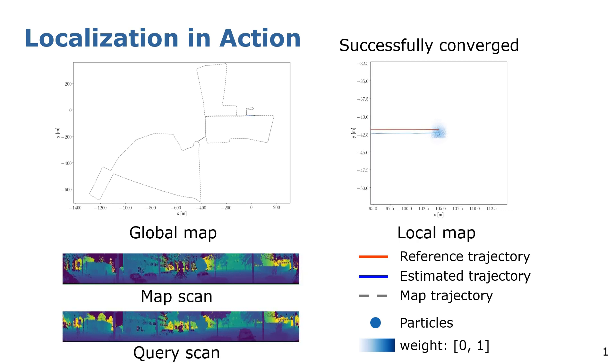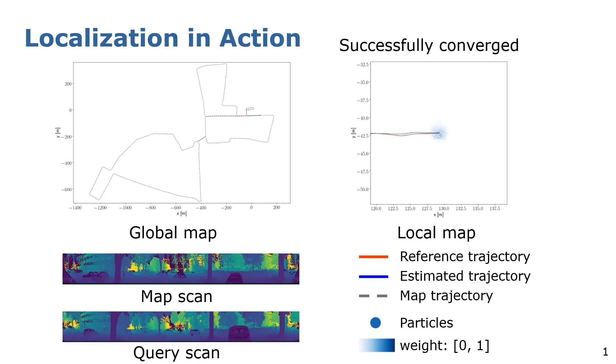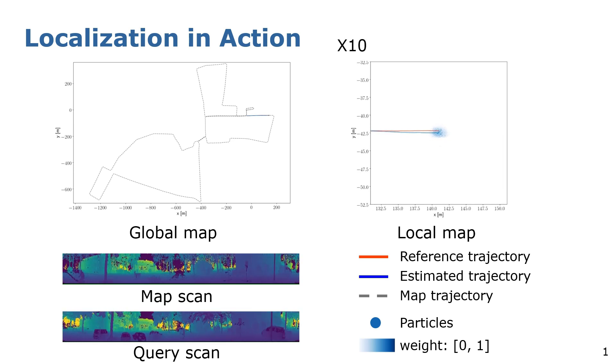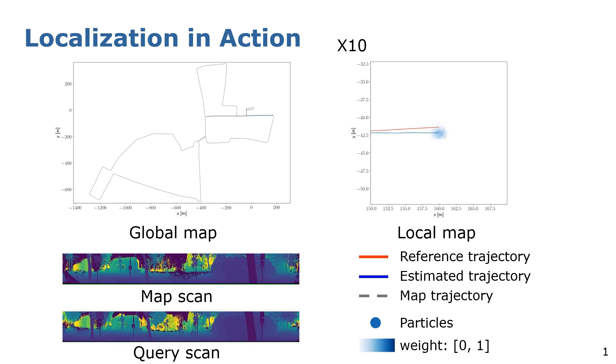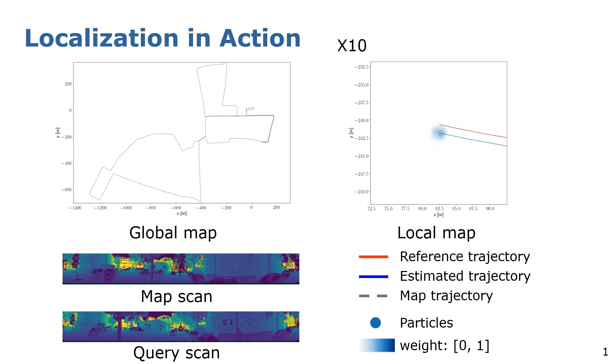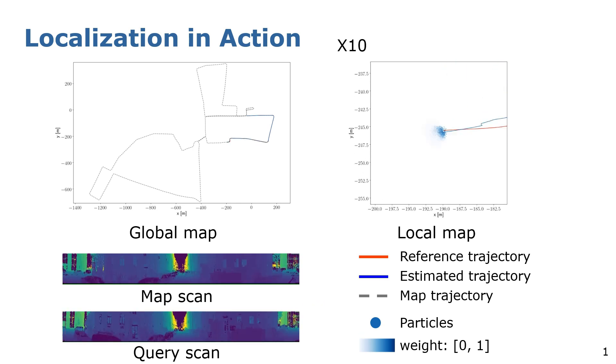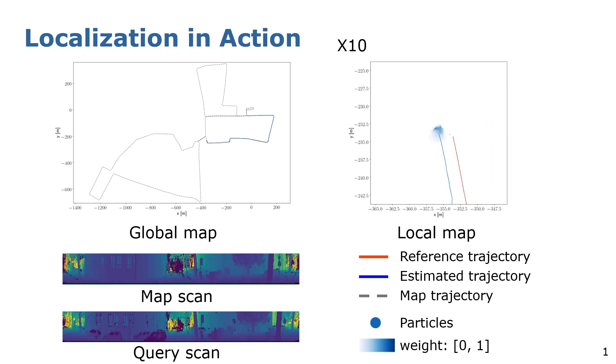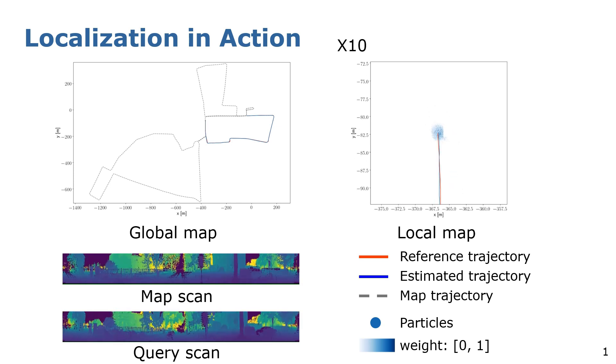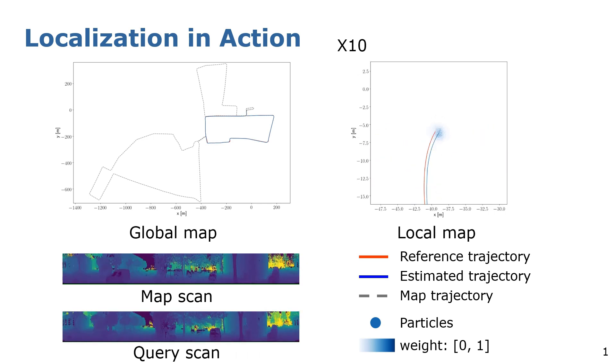In the lower part, we show the current query scan and the map scan of the estimated location. The red line represents the reference trajectory and the blue line represents the estimated trajectory. The blue dots are the particles and the darker the blue, the higher is the weight of that particle. Note that our method only uses the 3D LiDAR information as the input without taking other information like GPS or images into account. And as can be seen, it can achieve global localization successfully.